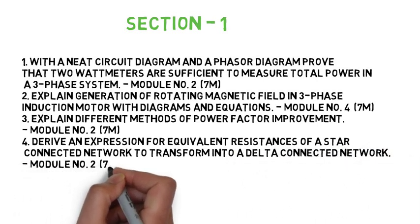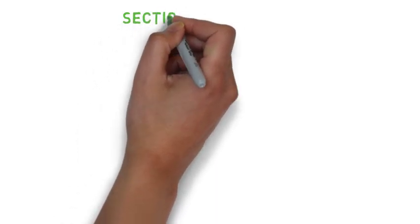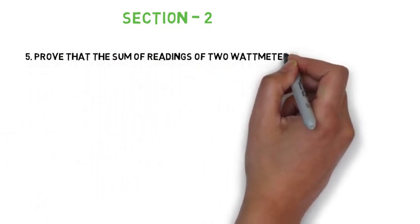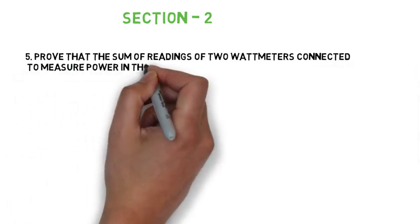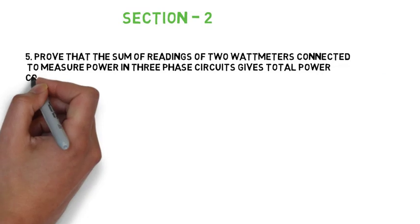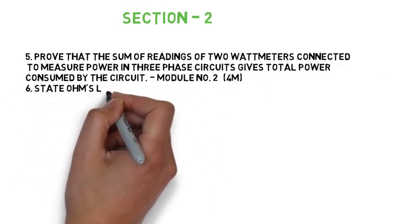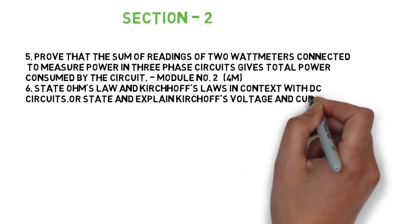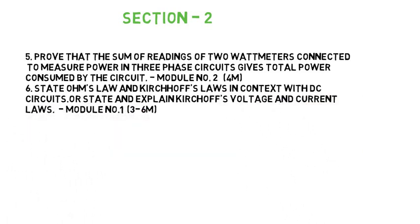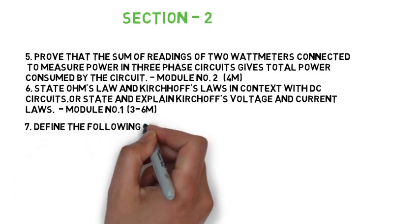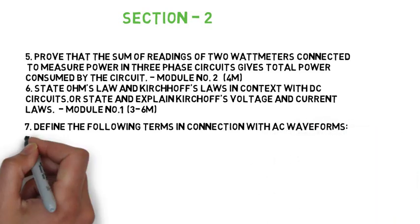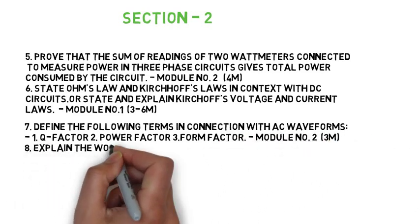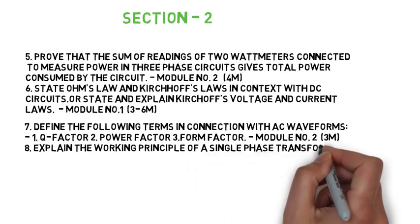This was Section 1. Now moving to Section 2, again 4 important questions. The fifth question: Prove that the sum of readings of 2 watt meters connected to measure power in 3-phase circuits gives total power consumed by the circuit — 4 marks. The sixth question: State Ohm's law and Kirchhoff's law in context with DC circuits, and state and explain Kirchhoff's voltage and current law — 6 marks. The seventh question: Define the following terms in connection with AC waveform — Q factor, power factor, and form factor — 3 marks each. The eighth question: Explain the working principles of a single-phase transformer — 3 marks.